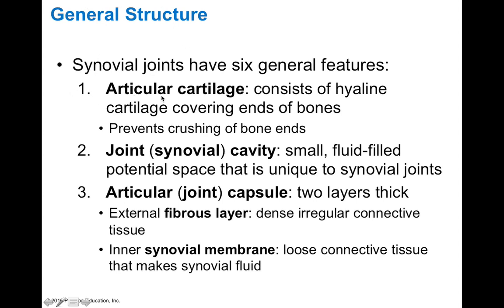Synovial joints will have articular cartilage because they include long bones. These long bones will have hyaline cartilage at the places where the joints occur, or articulations. The purpose of this articular cartilage is to prevent crushing of the ends of the bones, allowing for some cushioning — a nice hyaline cushion between those bones at the joint.